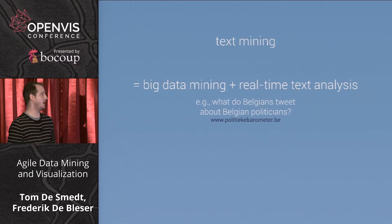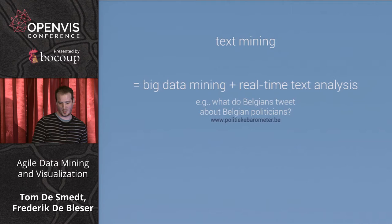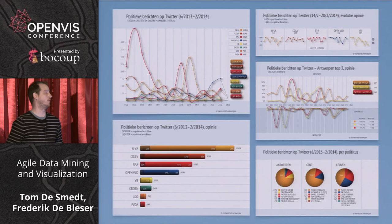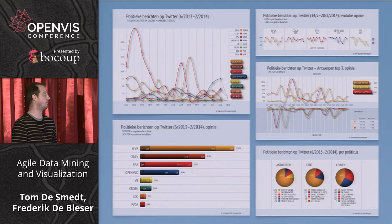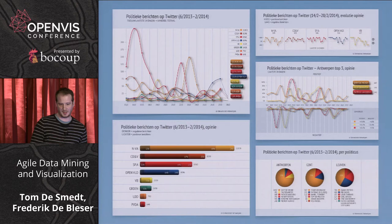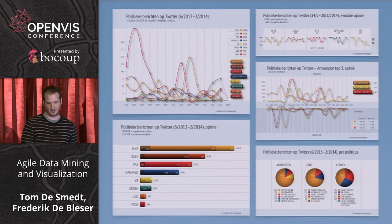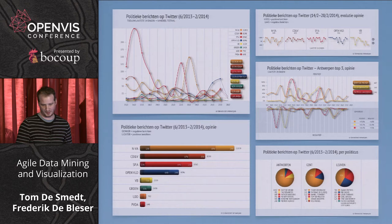To summarize: text mining is big data mining. You mine data from Wikipedia, Google, Twitter, or elsewhere, and do real-time text analysis — converting text to numbers. As one case study, we have a dashboard that tracks what people say on Twitter about Belgian politicians: amount of tweets per party, sentiment per party, politicians per city, top politicians, and timelines of sentiment. In the 2010 elections, we were able to predict the outcome two weeks in advance just by looking at what people online were saying.